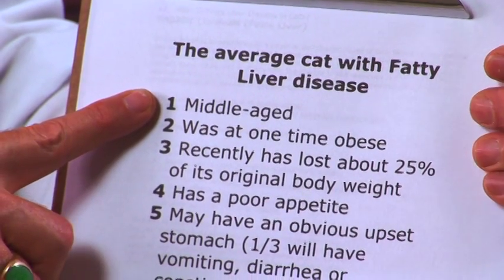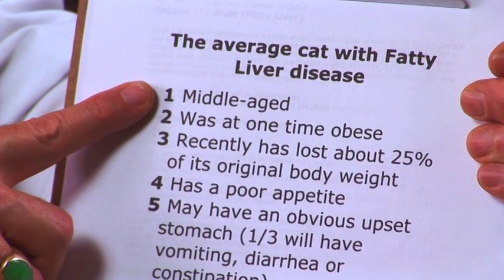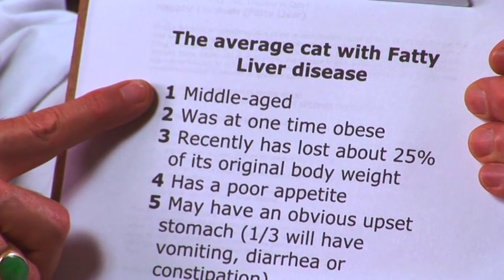The first thing you see with a cat with fatty liver disease is that it doesn't eat. Just like with people who have hepatitis or some liver problem, the appetite is really off — the cat may act well otherwise, but it's just not eating. The typical patient is a middle-aged cat, not necessarily young or old, but a healthy, well-fed, overweight cat.